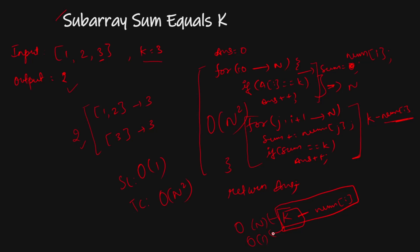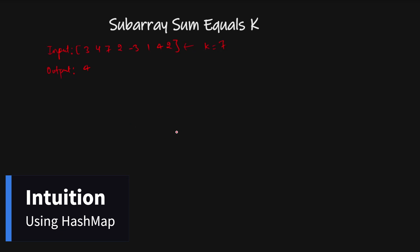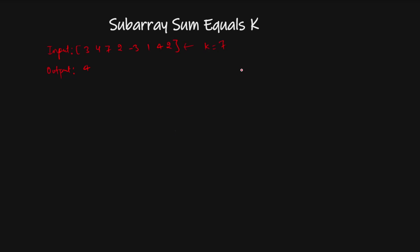Let's understand how to solve this problem using a hashmap with prefix sums. The key idea is: can we find sum minus k in O(1) instead of O(n)? We initialize our answer to zero, use a prefix sum starting at zero, and store {0: 1} in the map — because a prefix sum of zero occurs once initially.